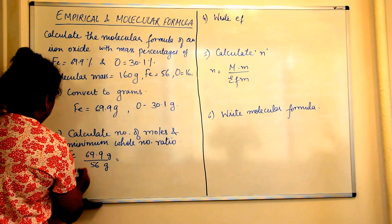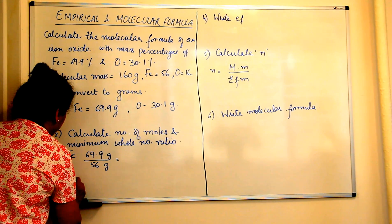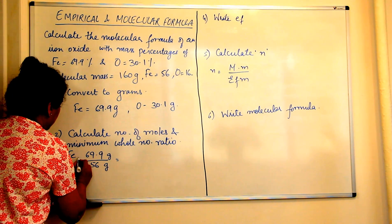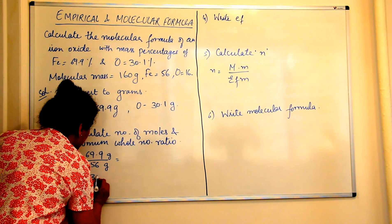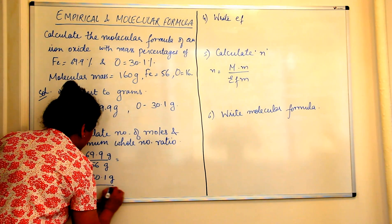And oxygen, on the other hand, would be how much? 30.1 grams divided by 16.